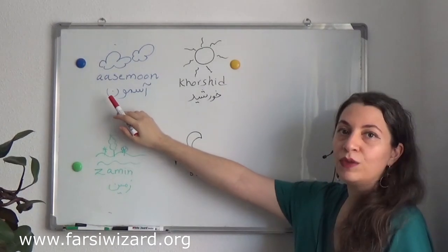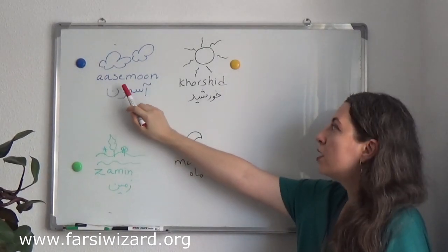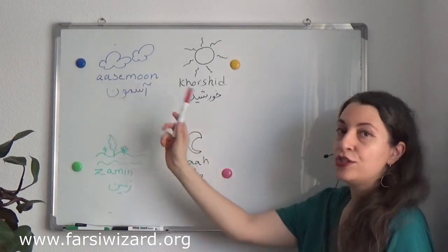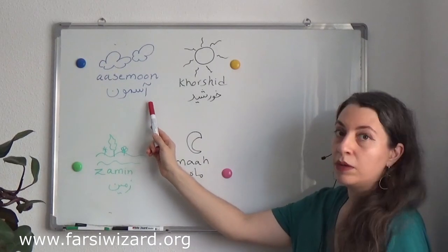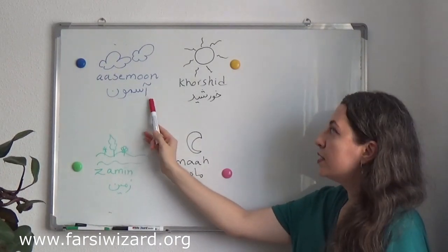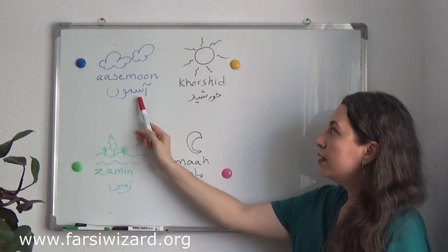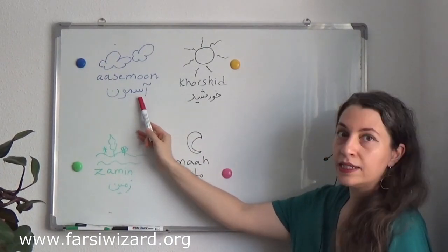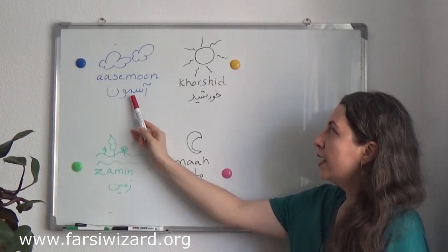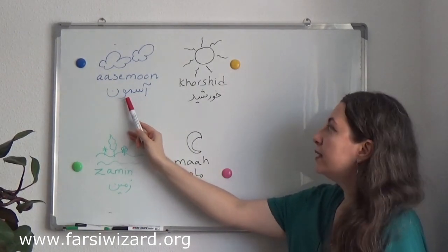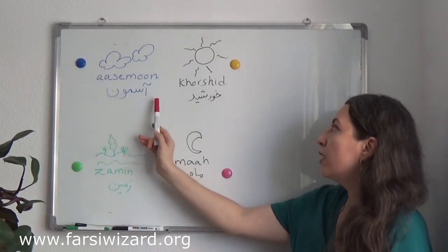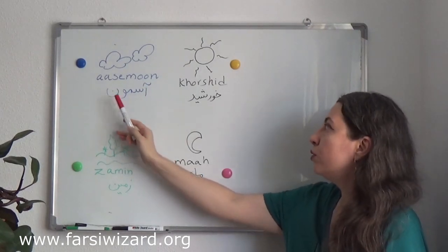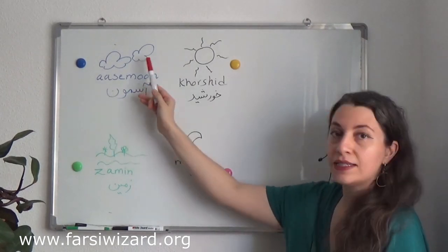Here we have the word 'asemun.' As you remember, in Farsi we write from right to left. So this is A, this is the letter S, the sound S, this is M, this is U, and this is N. Asemun means sky.